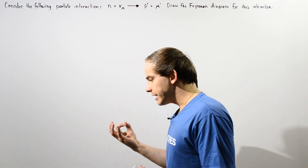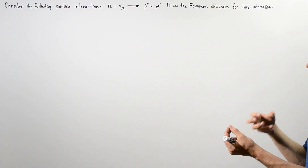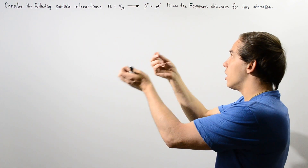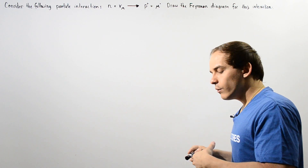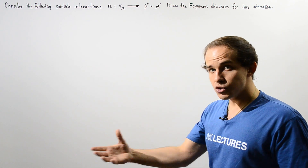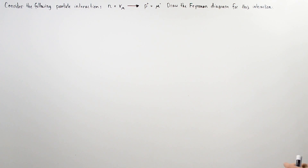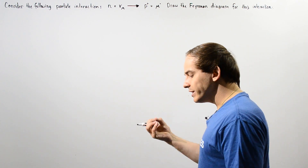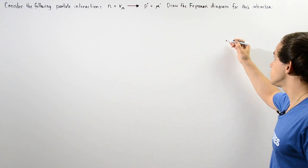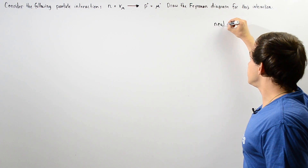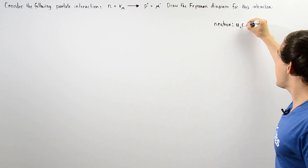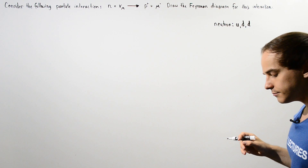Let's begin by trying to understand what is taking place on the sub-nuclear level. On one side we have a neutron; on the other side we have a proton. How exactly does our neutron become a proton? The neutron has no charge; the proton has a positive one charge. The neutron is a baryon that consists of three quarks: the up quark, the down quark, and the down quark.